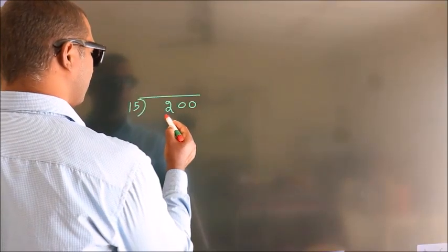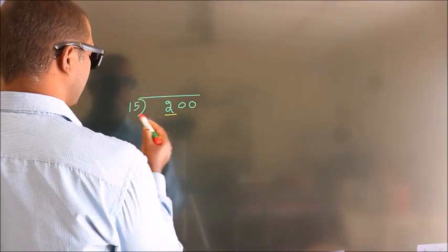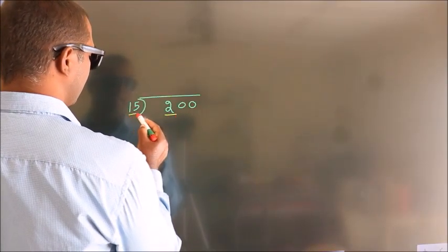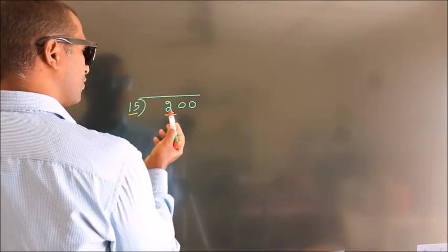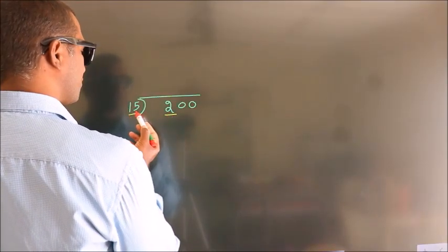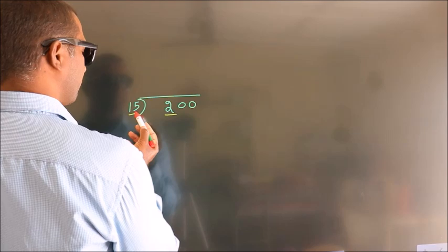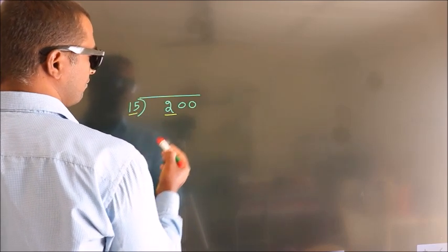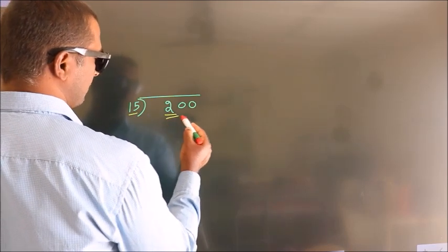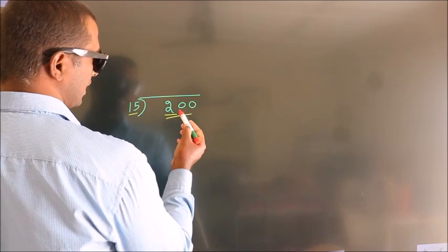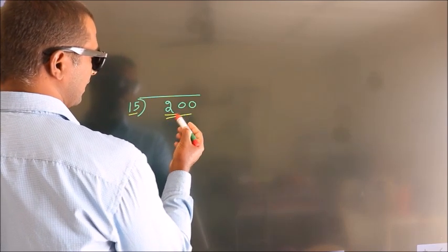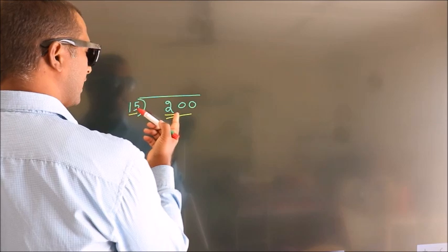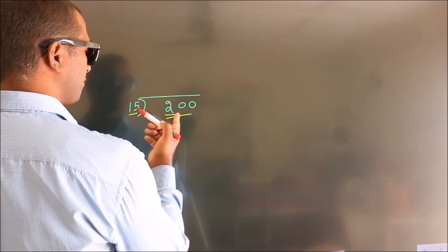Here we have 2 and here 15. 2 is smaller than 15, so we should take 2 numbers: 20. A number close to 20.